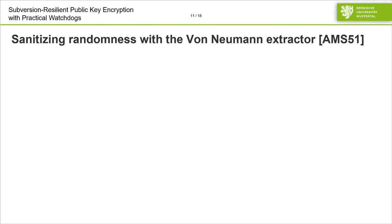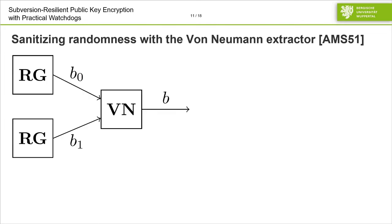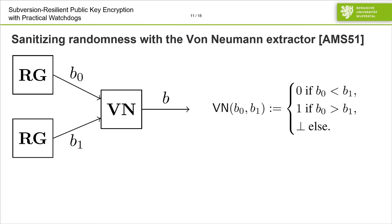Let's dive into the constructions and see how we can sanitize randomness via the von Neumann extractor, which was already introduced in 1951. We have two building blocks: RG, a randomness generator which outputs a random bit, and the von Neumann extractor VN. The trusted amalgamation will execute RG twice in order to get two bits, which are then fed into the von Neumann extractor. The von Neumann extractor takes two input bits and outputs 0 if b0 is strictly smaller than b1, 1 if b0 is strictly bigger than b1, and an error symbol otherwise. In case the two bits are equal and an error symbol is output, the trusted amalgamation will simply re-execute the whole construction.